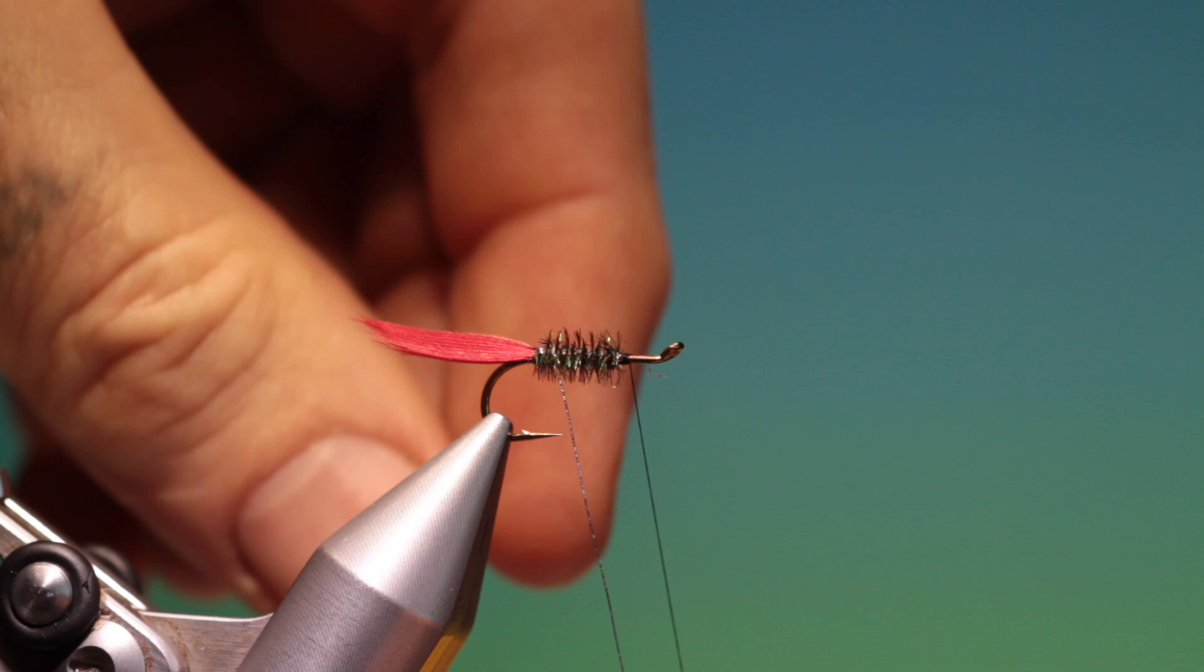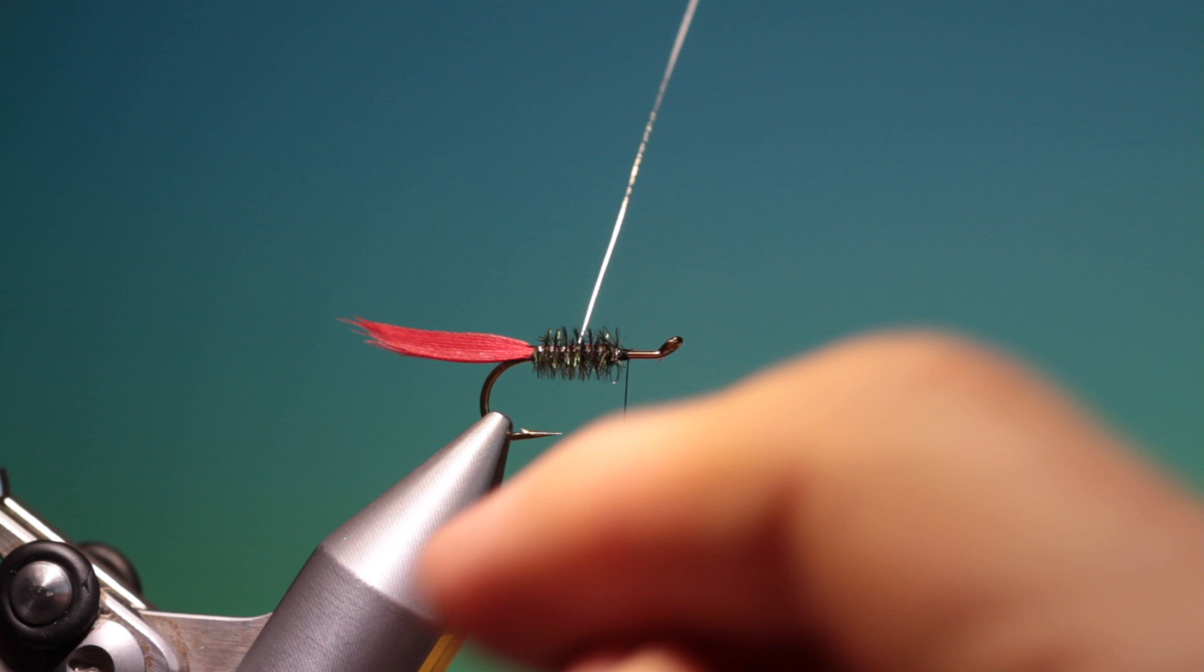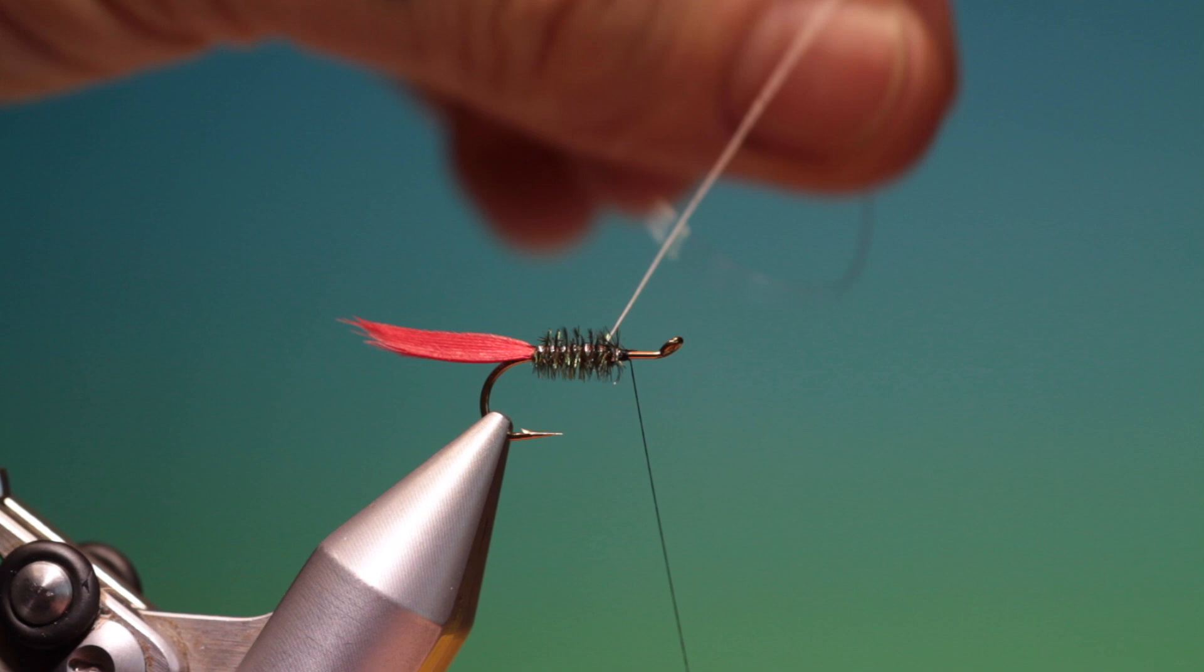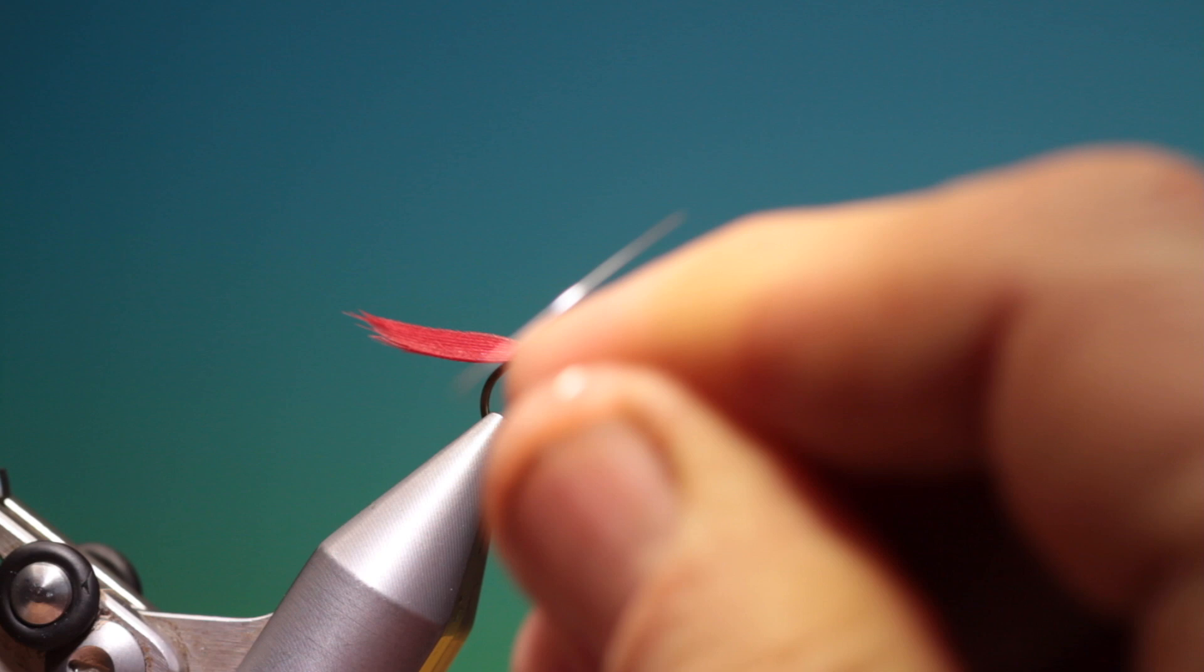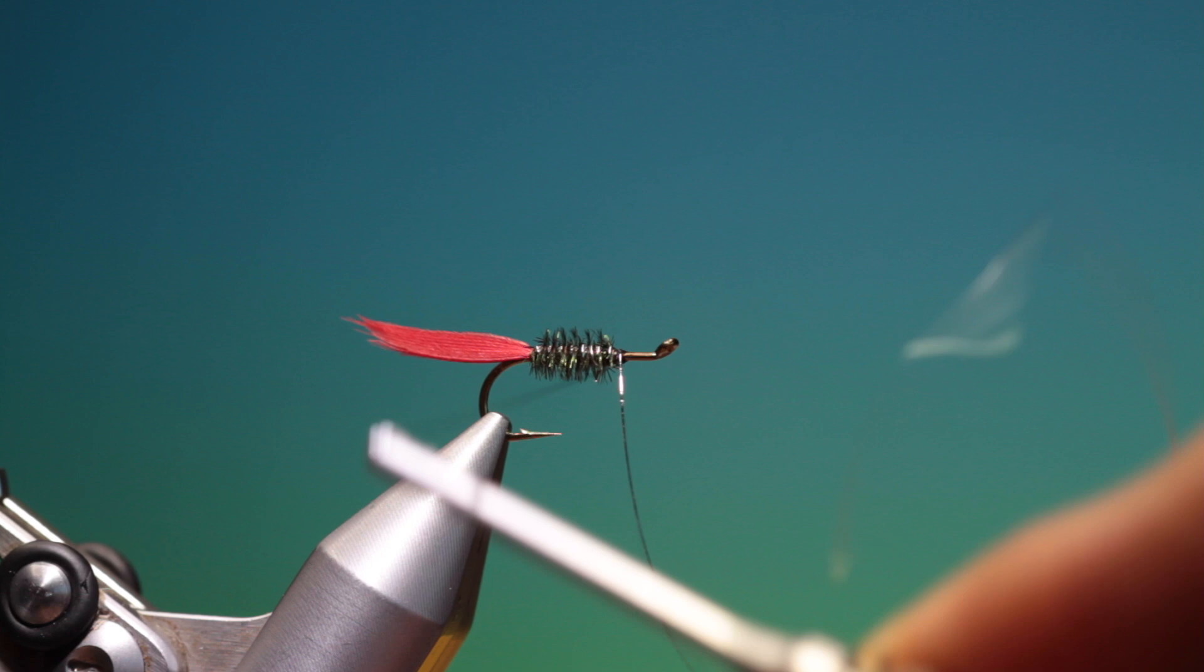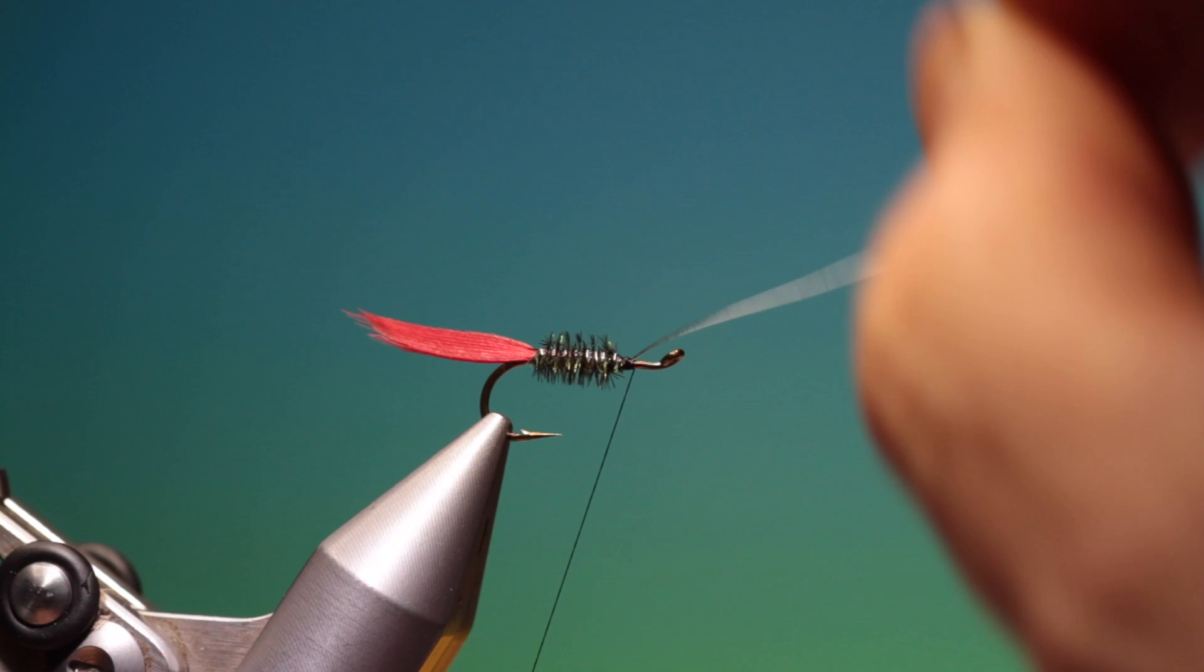Then we take our silver wire for the rib, and we go through on the quill. And we'll lock off that wire. And then we'll remove that with friction.